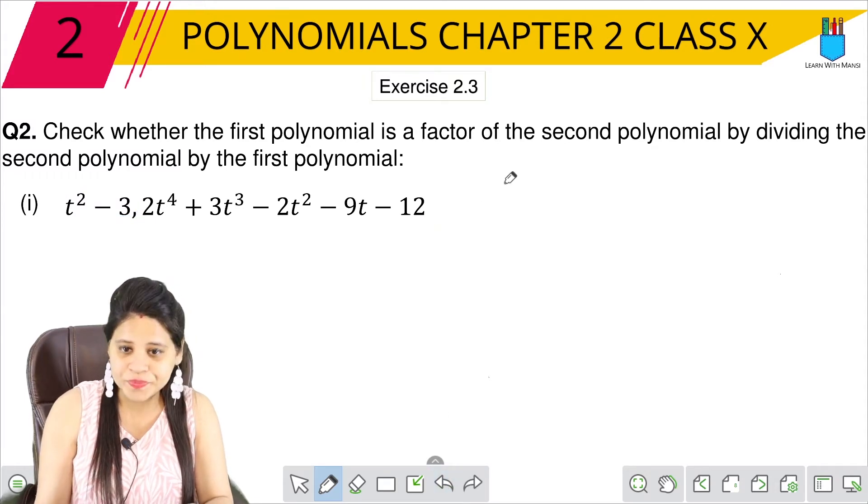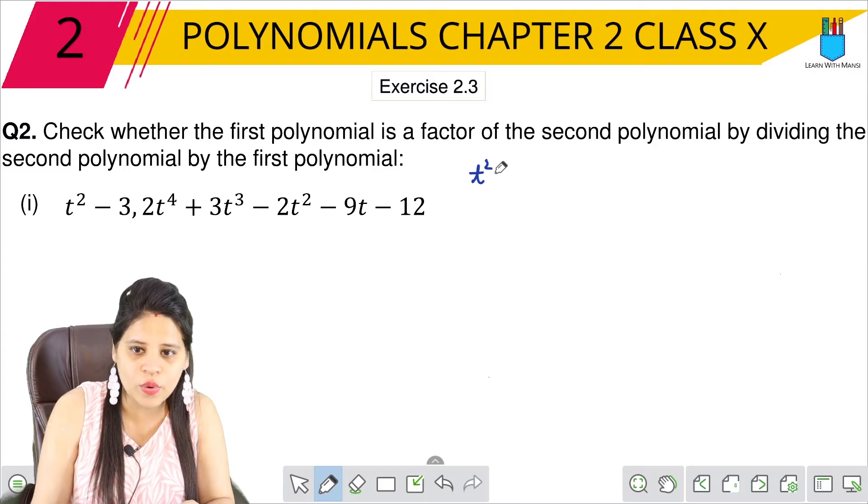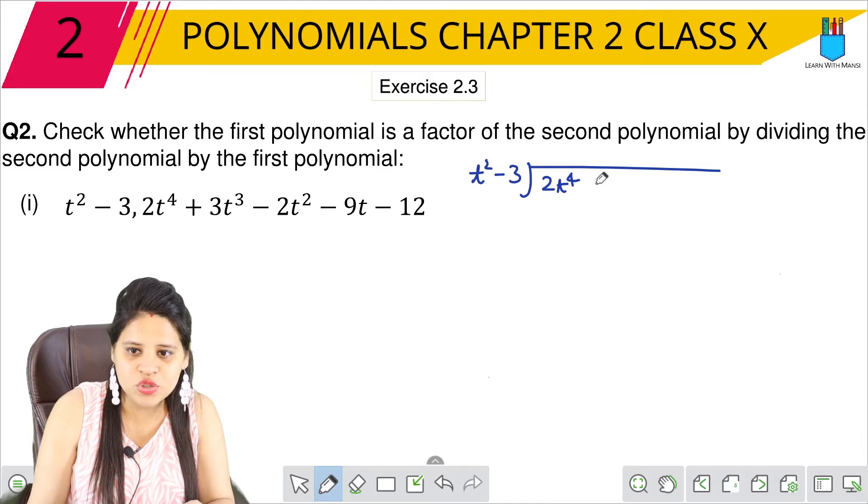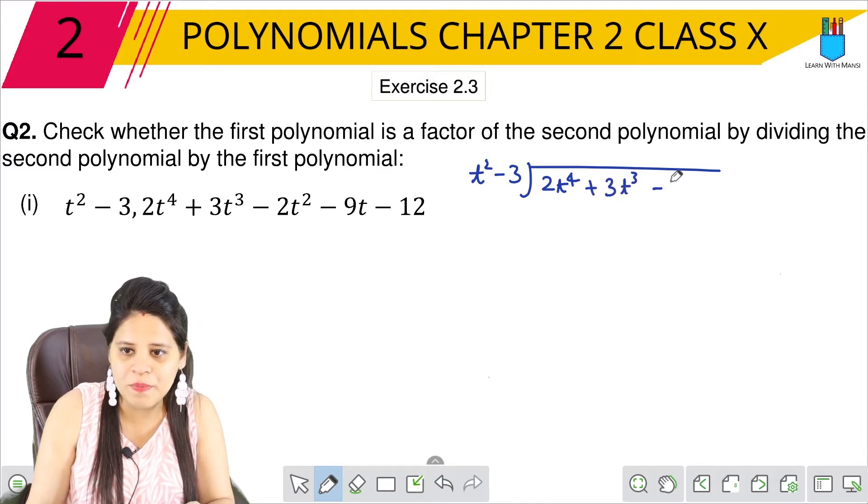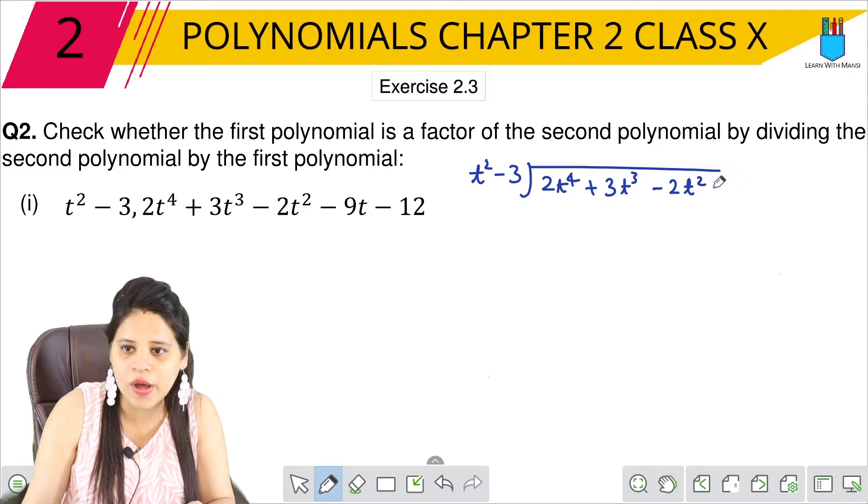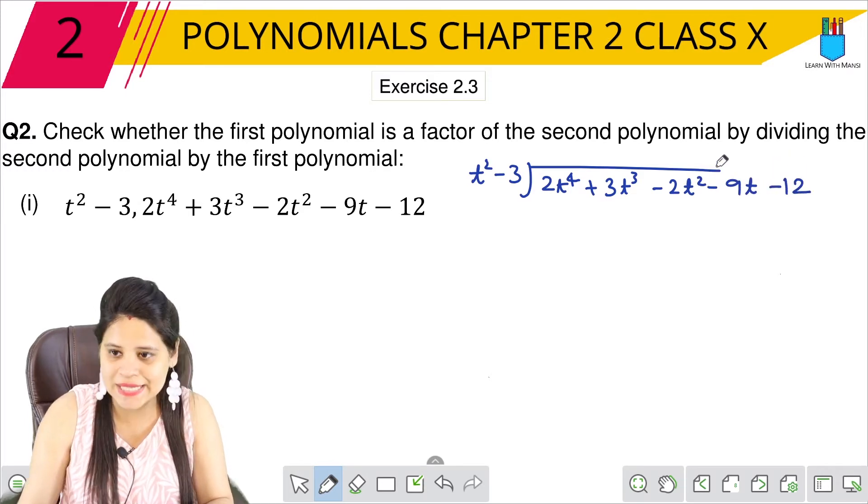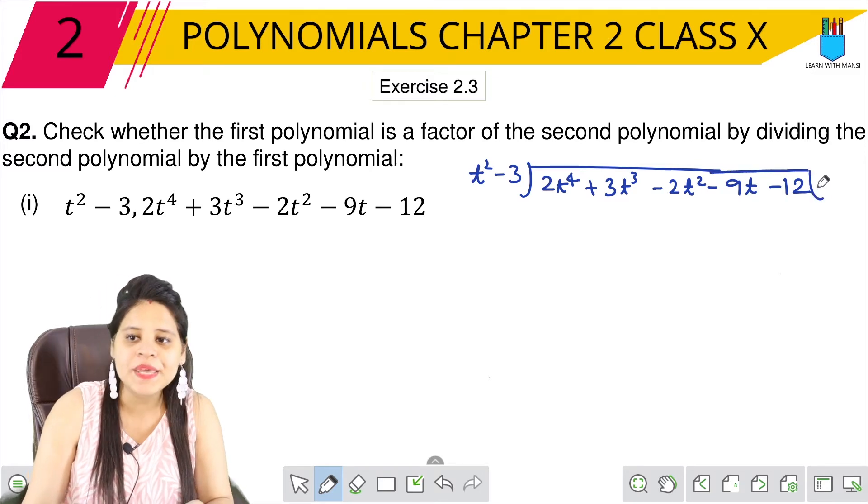So let's get started. So now we have to divide by t² - 3. We will write 2t⁴ + 3t³ - 2t² - 9t - 12. We have to perform division. So let's start.